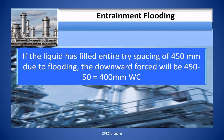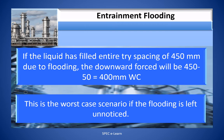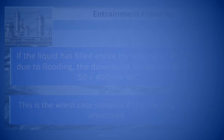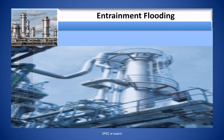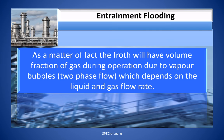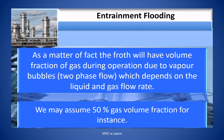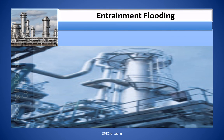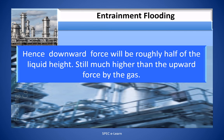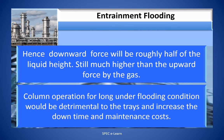If the liquid has filled the entire tray spacing of 450 mm due to flooding, the downward force will be 450 minus 50 equals 400 mm of water column — this is the worst case scenario if flooding is left unnoticed. In practice, the froth on the tray will have a volume fraction of gas due to vapor bubbles — two-phase flow — which depends on liquid and gas flow rate. Assuming 50% gas volume fraction, the downward force will be roughly half of the liquid height, still much higher than the upward force from the gas. Column operation for long periods under flooded conditions would be detrimental to the trays and increase downtime and maintenance costs.